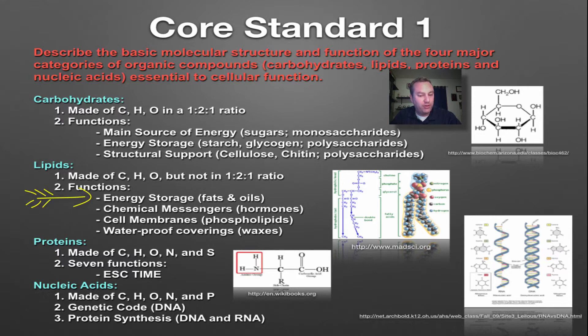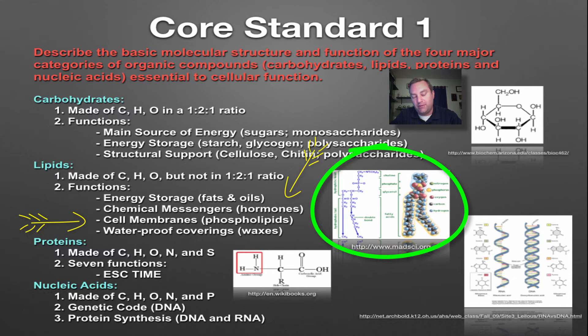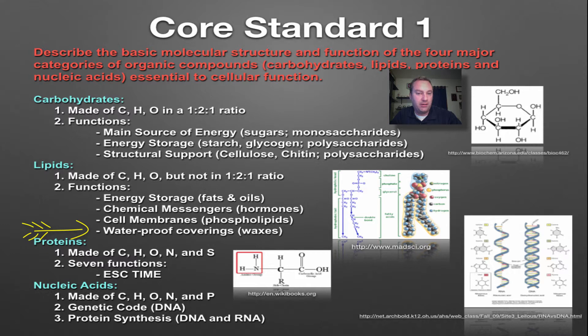They've got four functions. Number one, energy storage, this is typically of your fats and your oils. They can be chemical messengers, and remember chemical messengers are called hormones. They do make up the primary component of cell membranes. As you see over in this picture here, this is a phospholipid where they have their polar heads and their non-polar tails. And finally, some organisms like leaves on plants and some insects will have waxes which work as a waterproof covering.